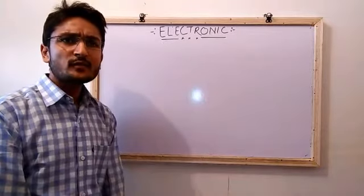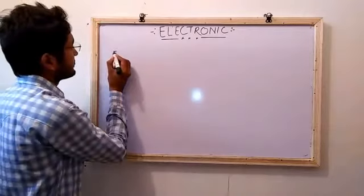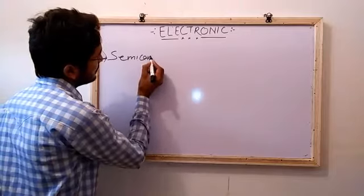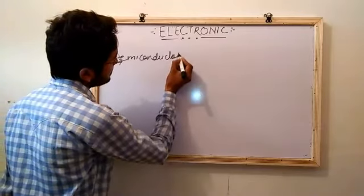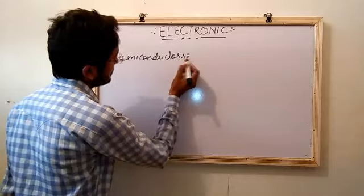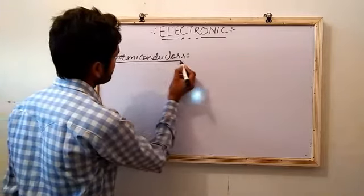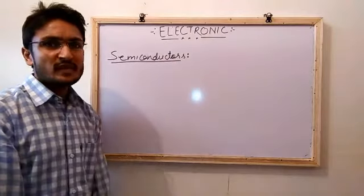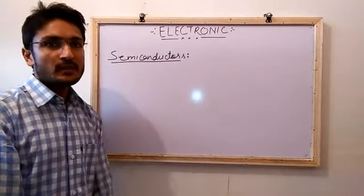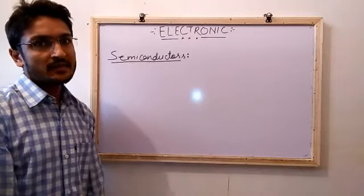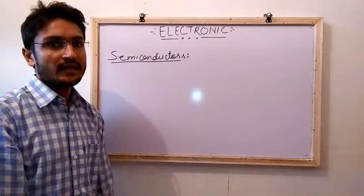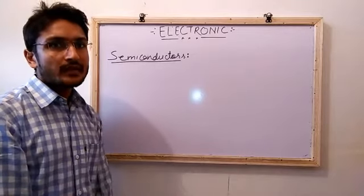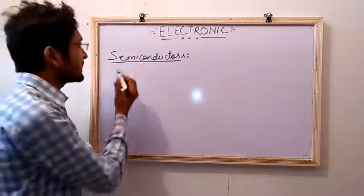Electronics is based on semiconductors, because every device is made by a semiconductor — just like mobile phones, TV, LCD, amplifier, computers, and laptops. These are made by a semiconductor.